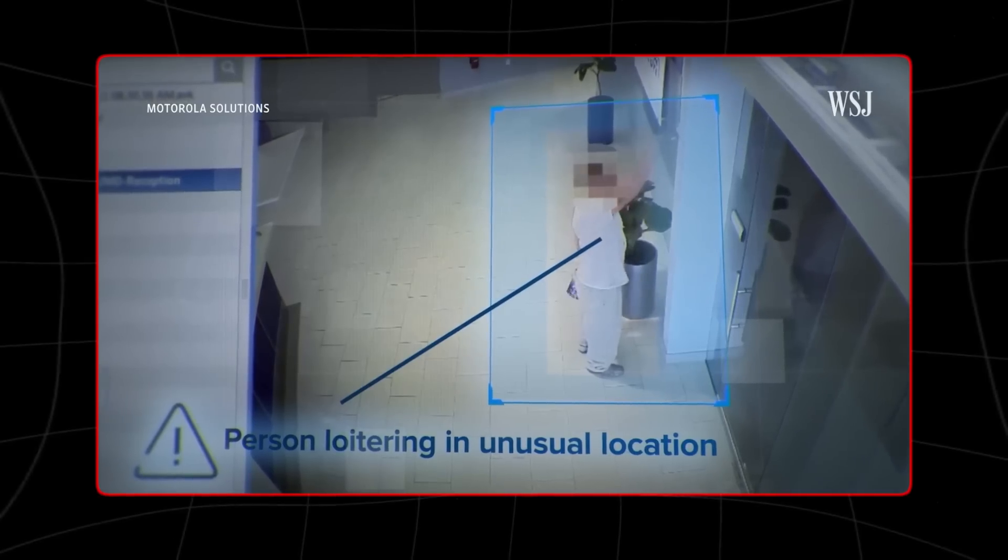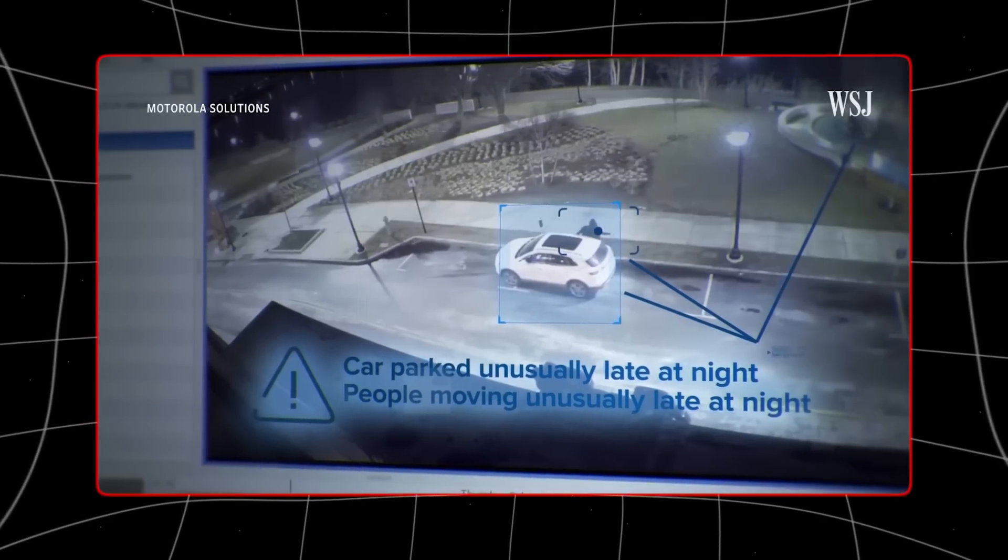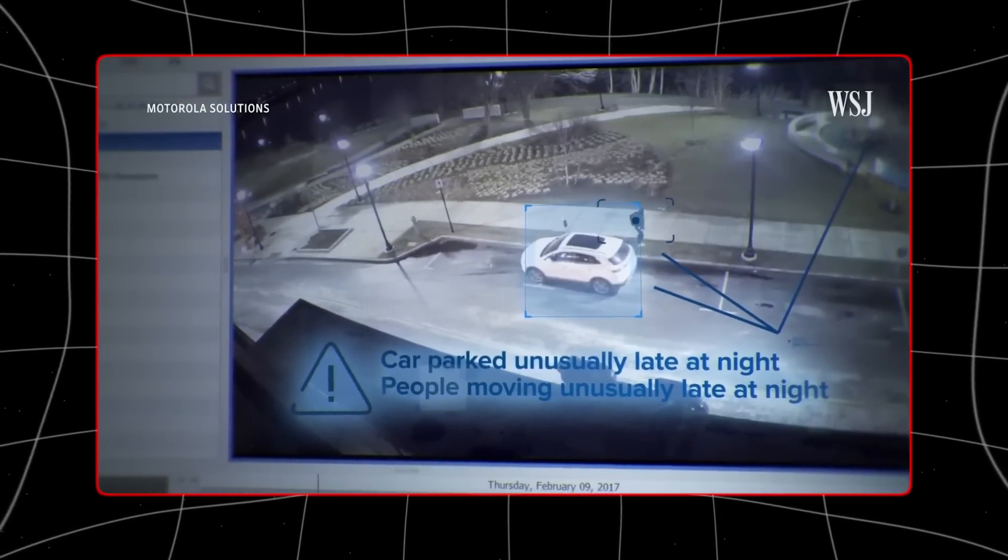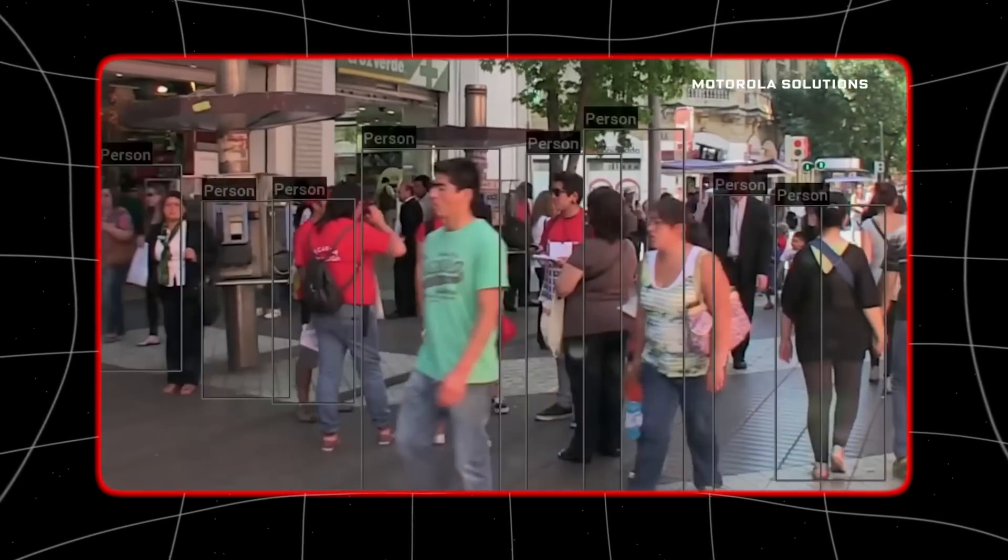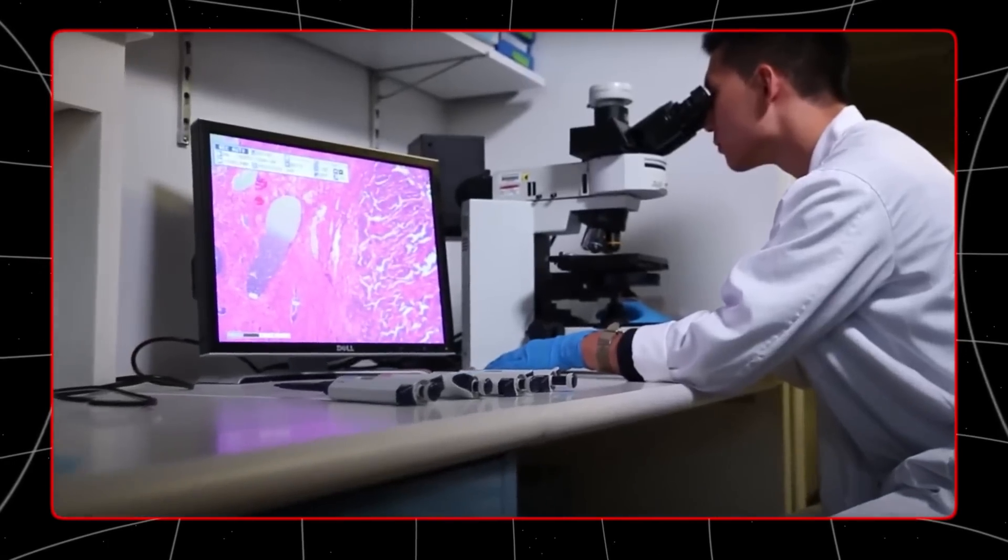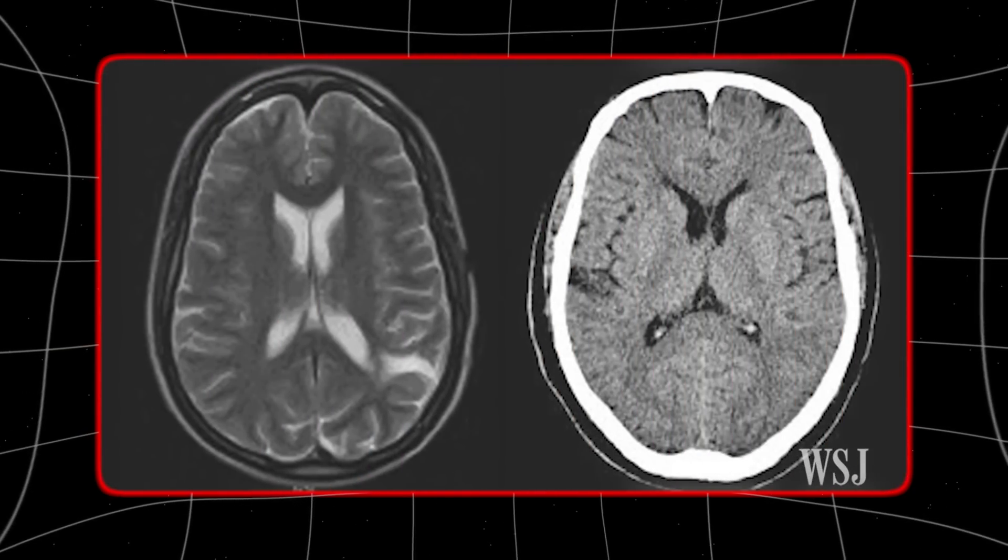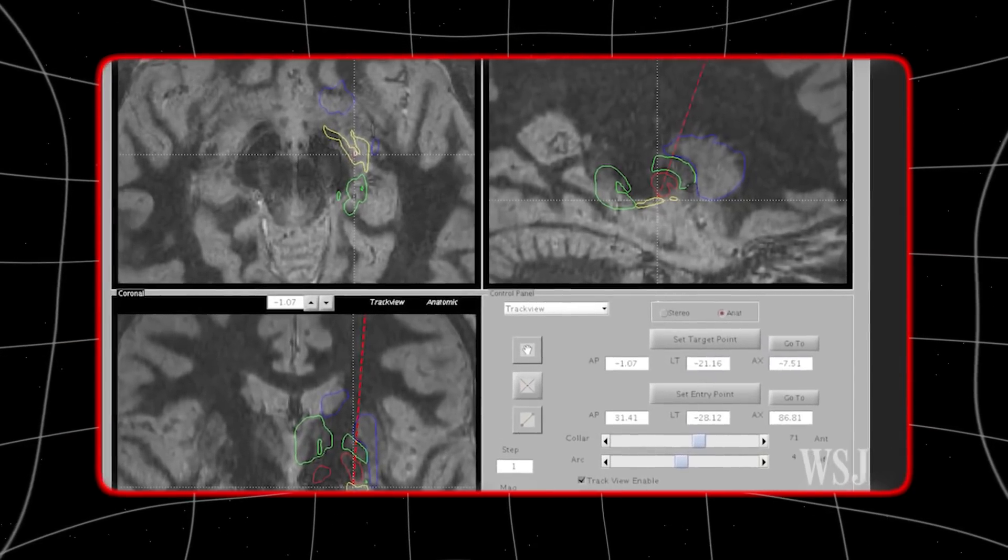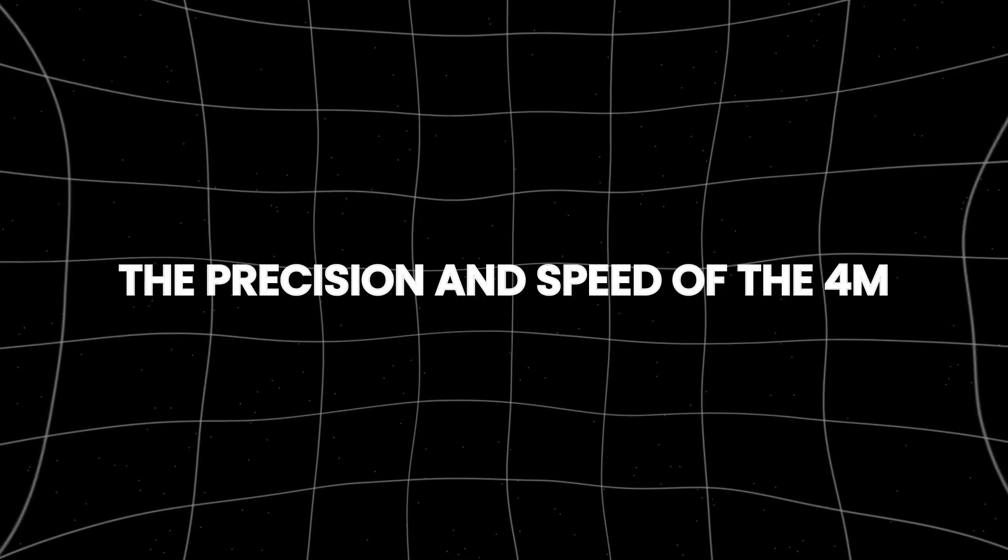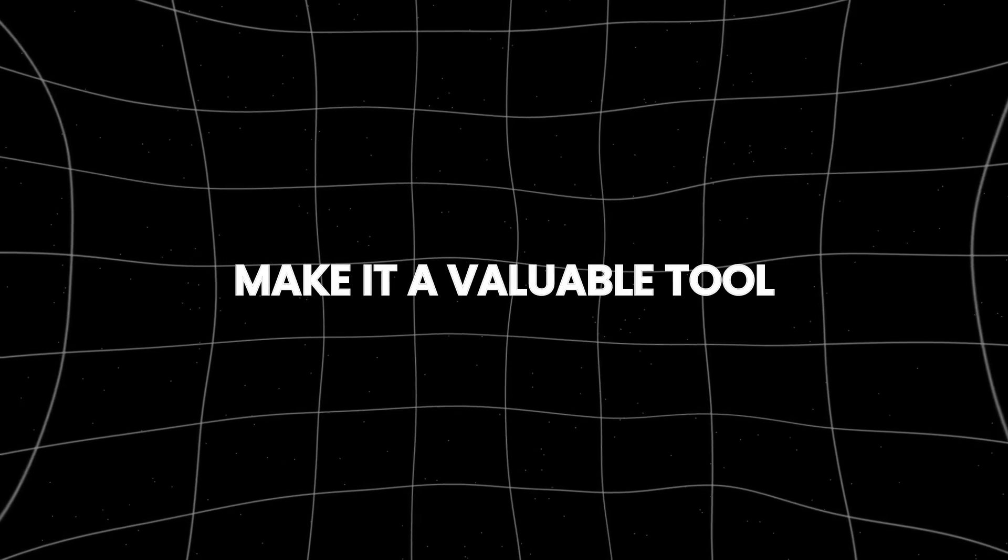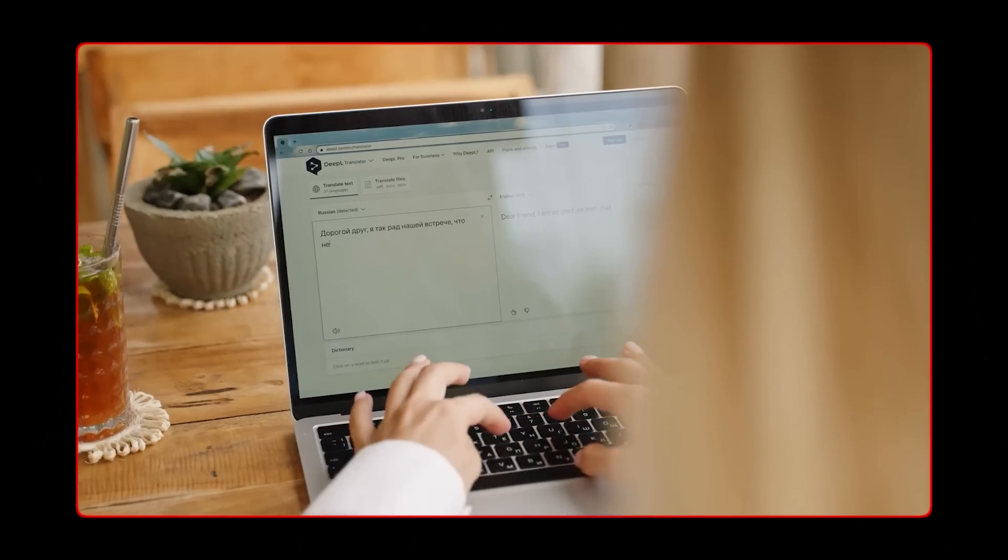For example, in security systems, the AI can analyze footage to detect an alert for specific activities, such as unauthorized access or suspicious behavior. In healthcare, it can assist in medical imaging by accurately identifying anomalies or conditions, thus aiding in diagnosis and treatment planning. The precision and speed of the 4M model in detecting objects make it a valuable tool across various industries.